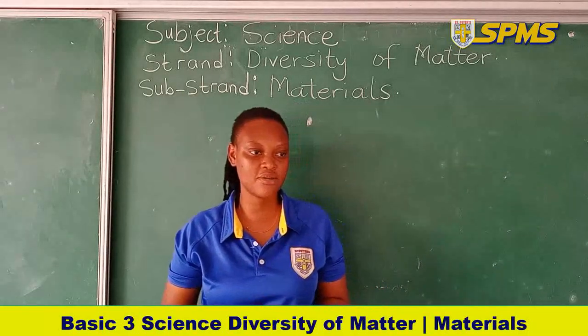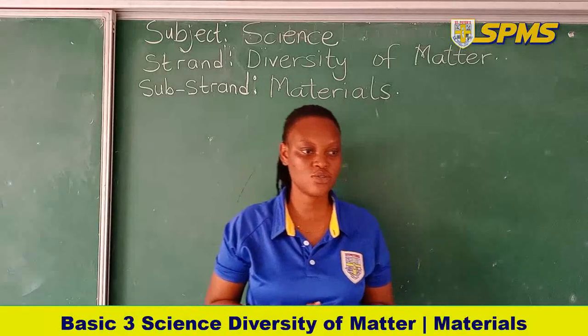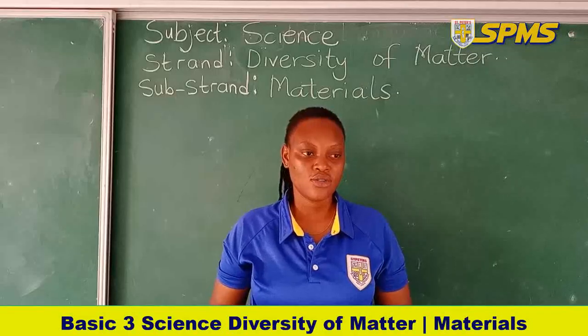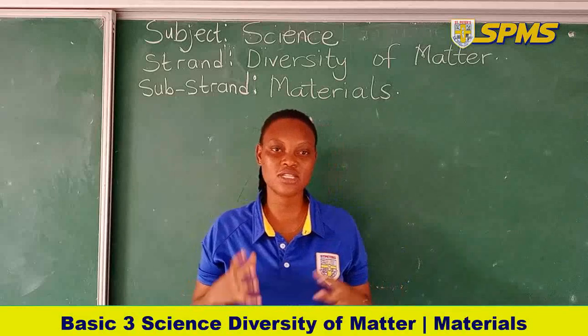Our first material is wood. Look on your screens — you can see different types of wood. The wood has been cut into so many shapes and sizes, and it is through this wood that we get different objects. Some things we use daily are made of wood. Wood is a hard material and does not break easily.